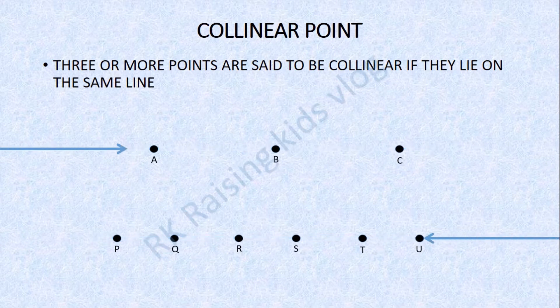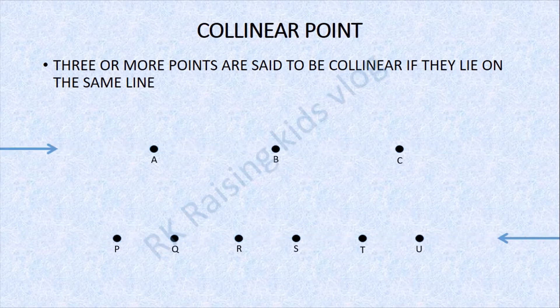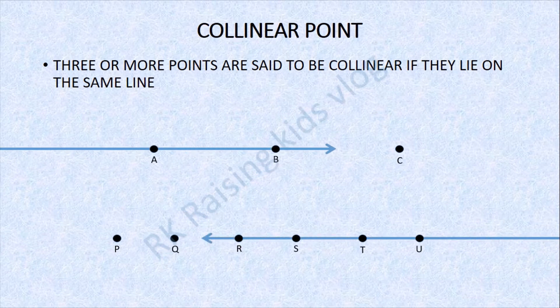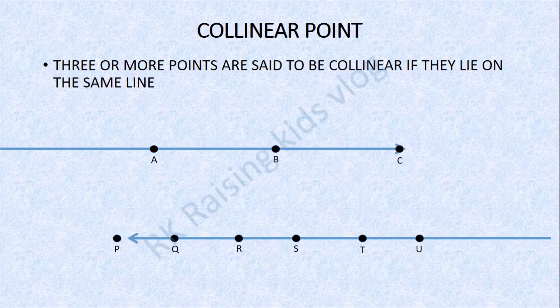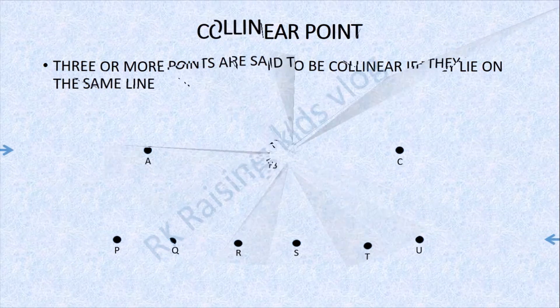The same thing applies to the points P, Q, R, S, D, U — they are lying on the same line, so that's why they are called collinear points.